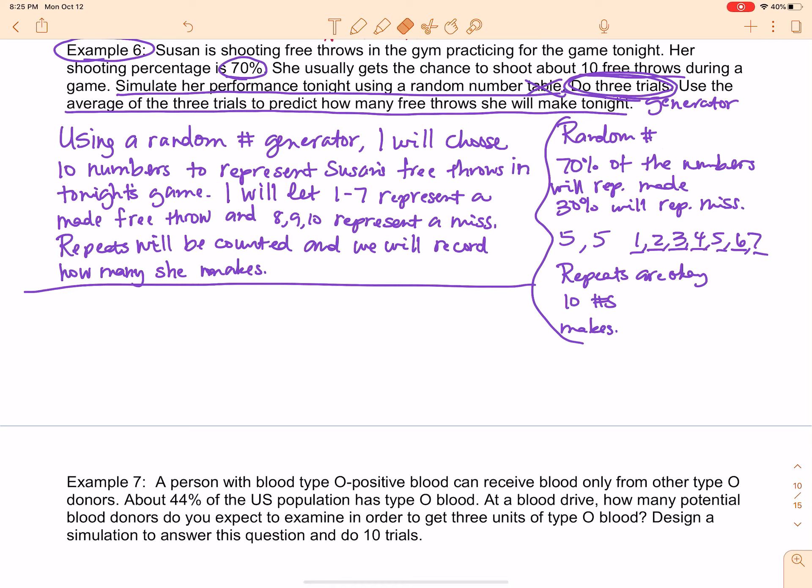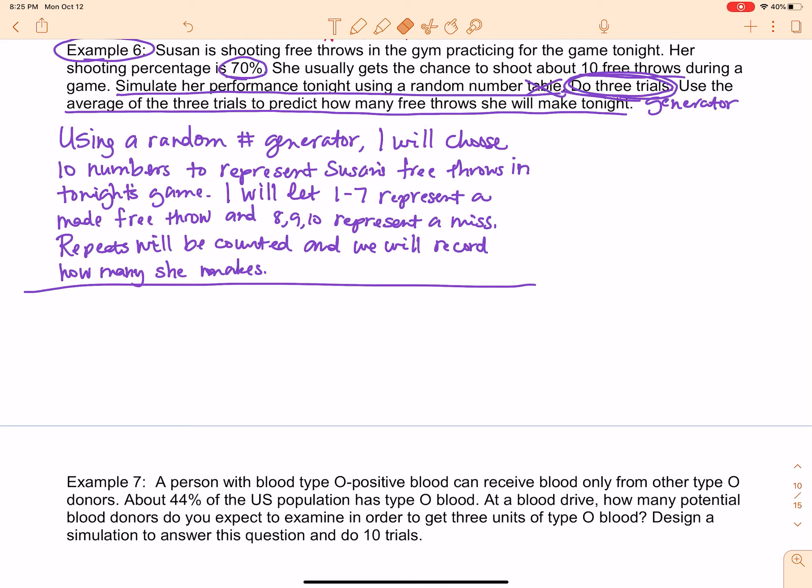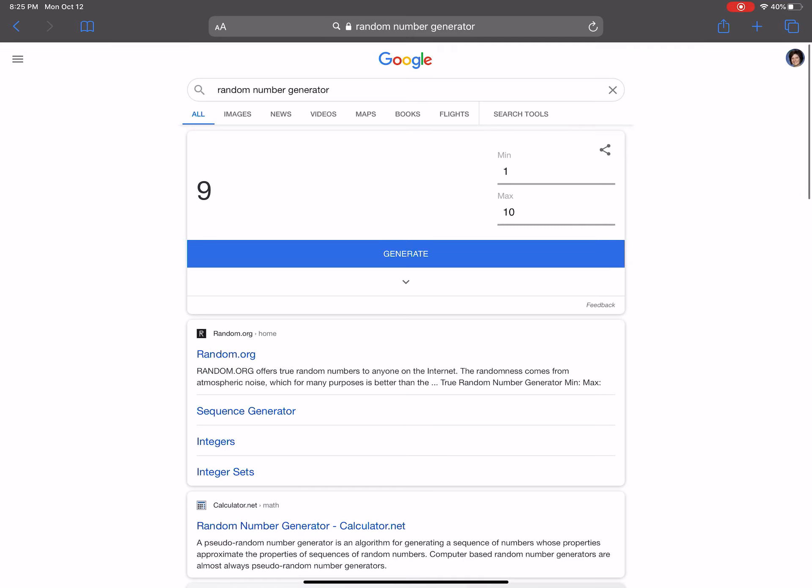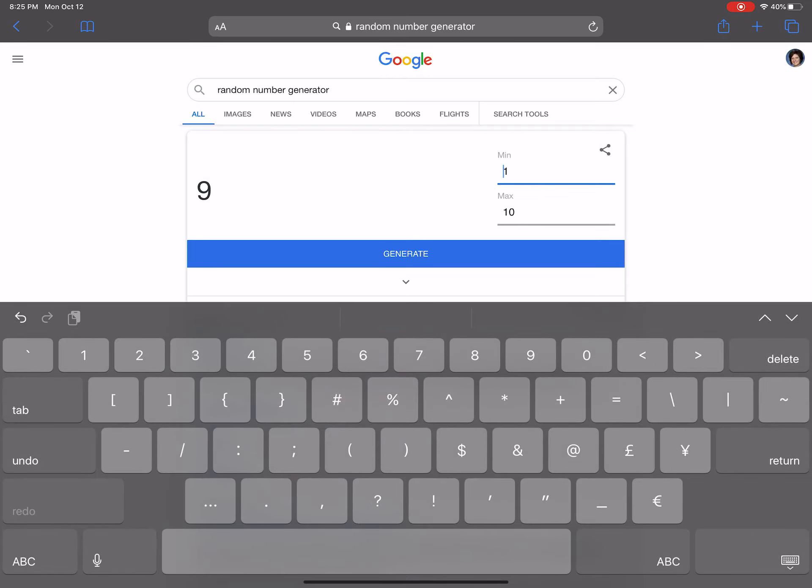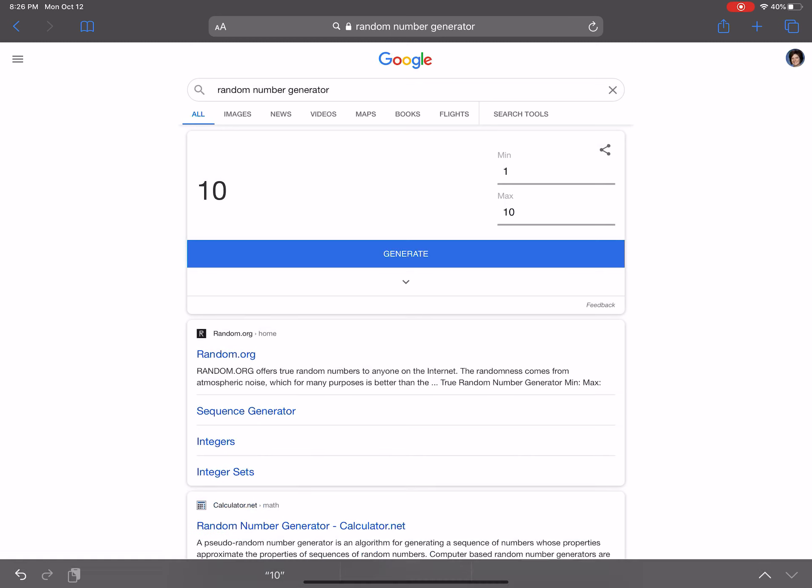So now I'm going to get rid of this stuff because those were just notes to help you understand writing the directions out. So how are we going to do this? Well, I am going to go to my random number generator and I've already got it set up here to choose my 10 numbers. I've got a minimum of 1 and a maximum of 10. So I am just going to hit generate 10 times so that I will know what I've got here and I'm going to record these on paper which you can't see me do.